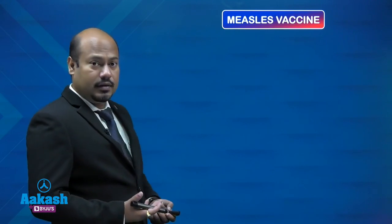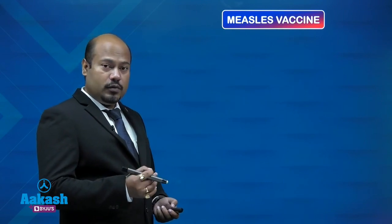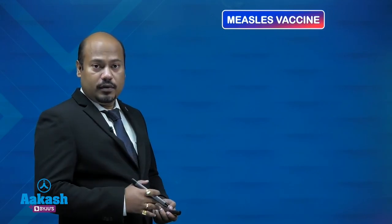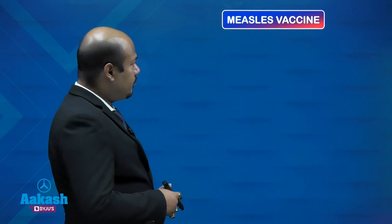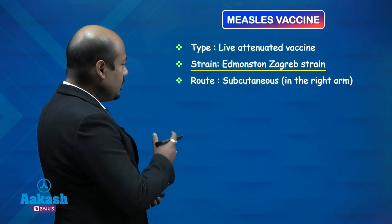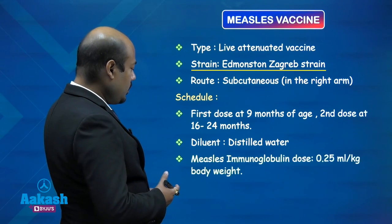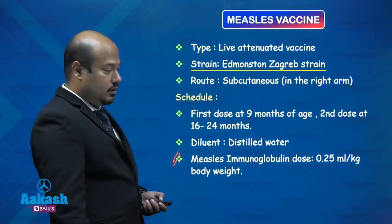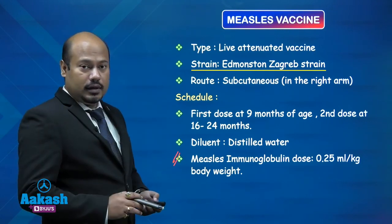The measles vaccine is a live attenuated vaccine; the strain used is the Edmonston Zagreb strain. It is given at nine months, is a lyophilized (powder form) vaccine diluted with distilled water, and administered by the subcutaneous route. First dose at nine months along with vitamin A; booster at 16 to 24 months. Measles immunoglobulin, given at 0.25 ml/kg body weight to direct contacts, is an example of passive immunity.